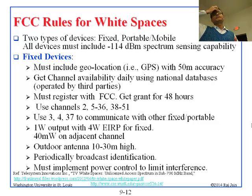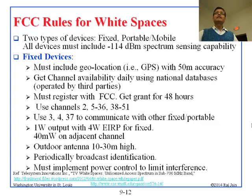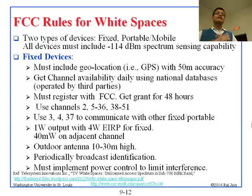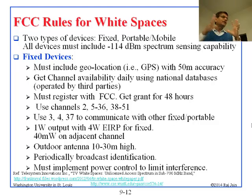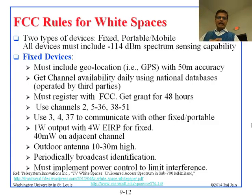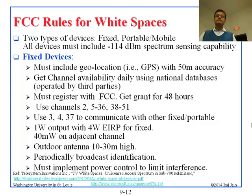When you go to a game arena, announcers all over the field use wireless microphones, and if your cell phone started using the same frequency, their wireless microphone would be disrupted. So channel 37 is reserved for wireless microphones. Fixed devices can transmit 1 watt, which is 30 dBm, with 4 watt EIRP — meaning you can concentrate the signal so it becomes 4 watts in one direction. On adjacent channels, the limit is 40 milliwatt.